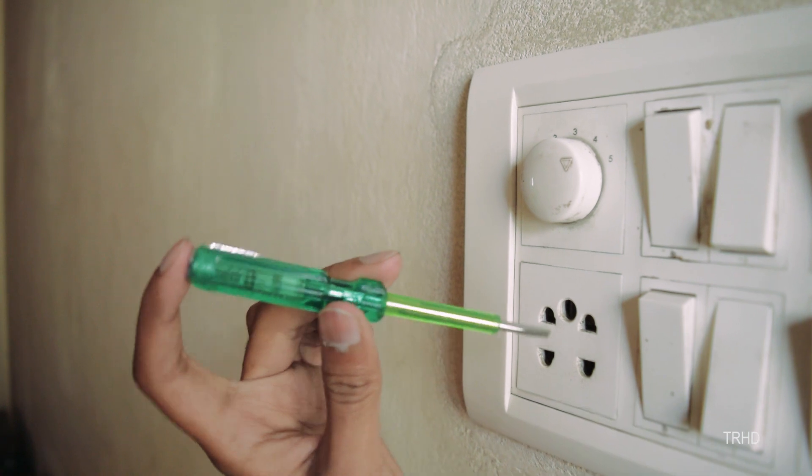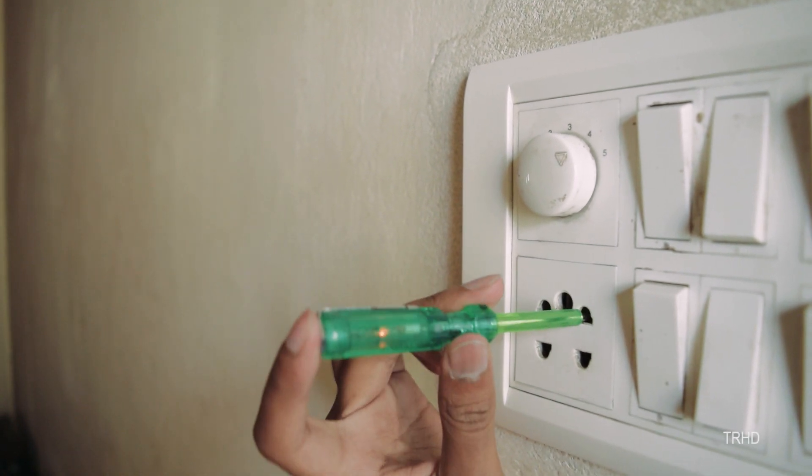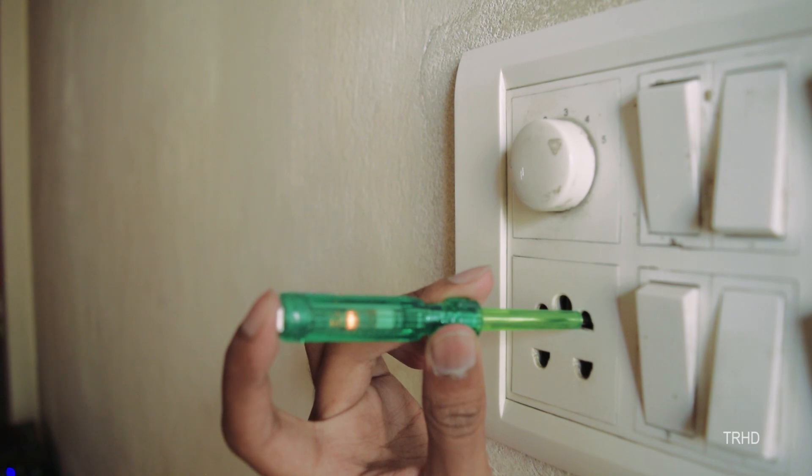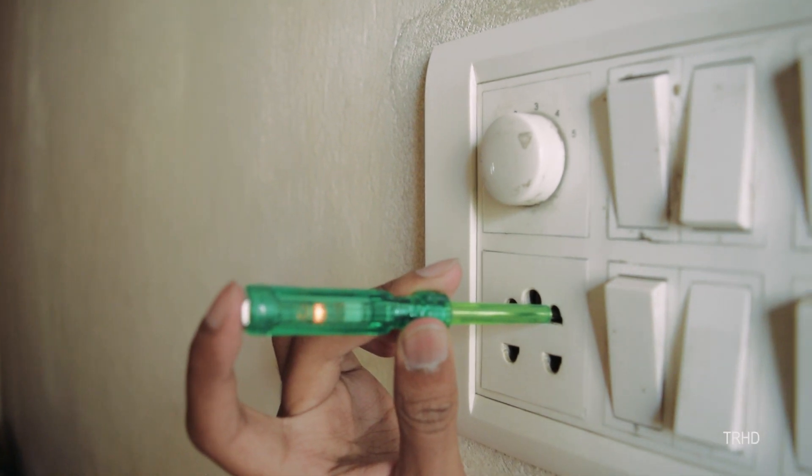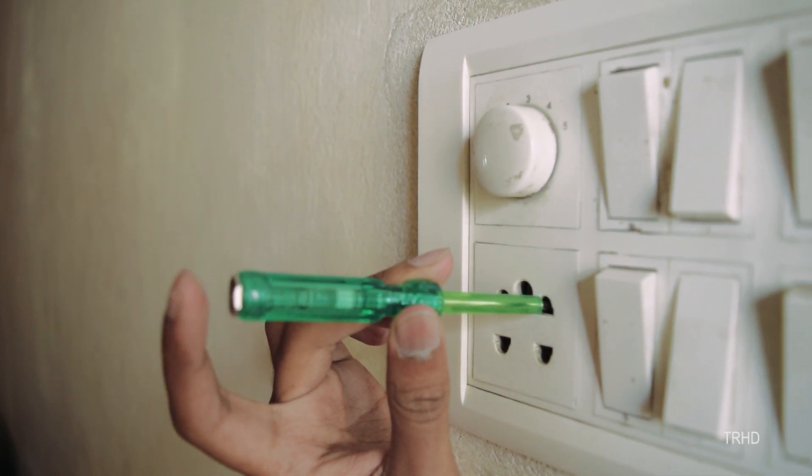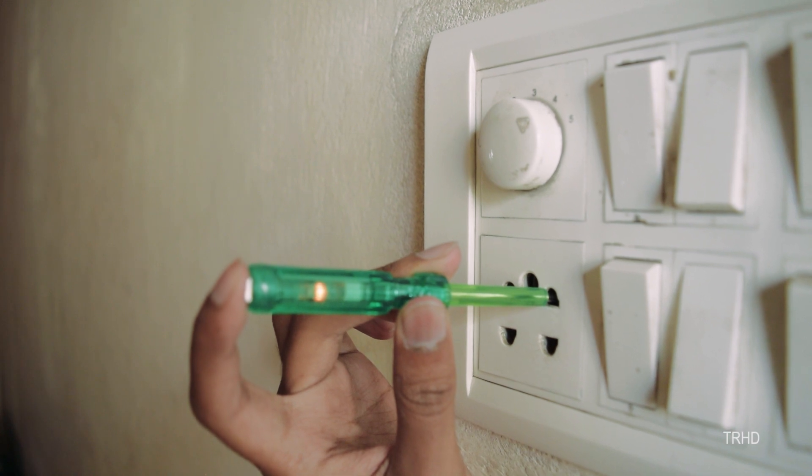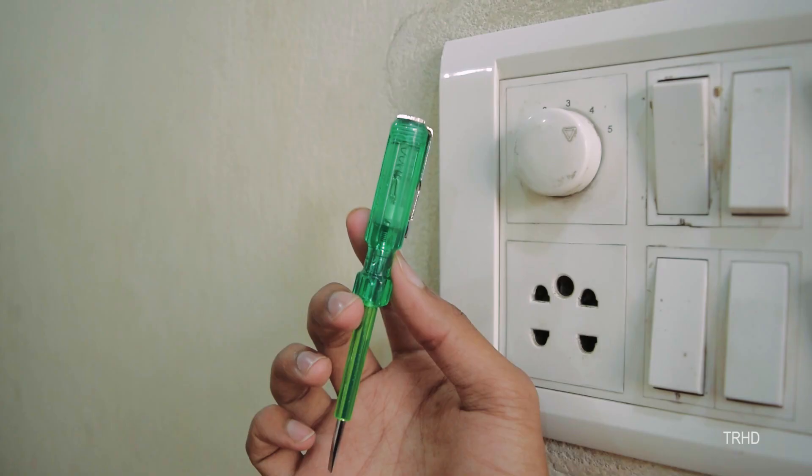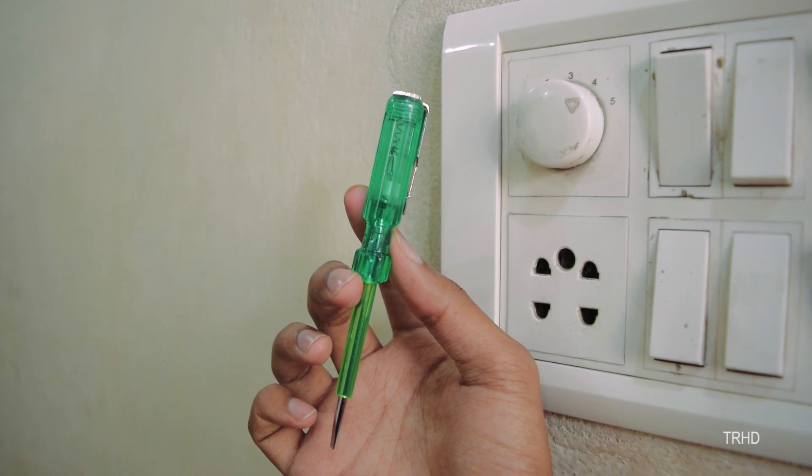Now let's see how to use this tester. The tip of the tester must be touched to the conductor being tested. It has a neon lamp inside which takes very little current to glow and can use a user's body capacitance to ground or earth for completing the closed circuit. There's also a large value resistor which is present inside it to further lower the current flow through the tester.